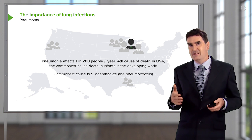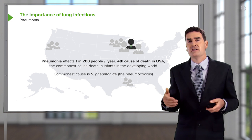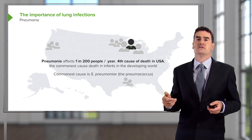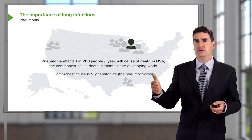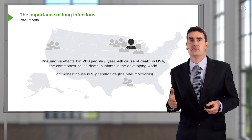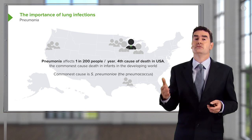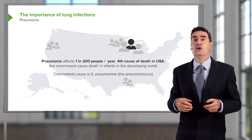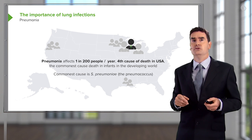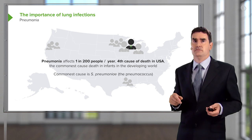Pneumonia is incredibly common. It affects about one in 200 people each year. It's the fourth commonest cause of death in the USA, with similar data for other industrialized countries. It is actually the commonest cause of death in children under the age of five across the developing world. The pneumococcus — Streptococcus pneumoniae — is the commonest cause.